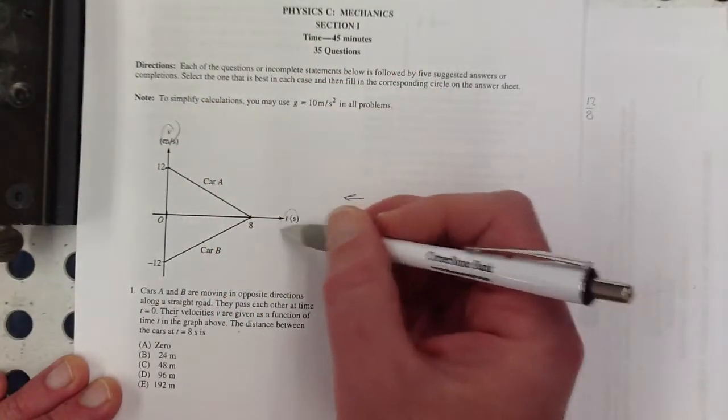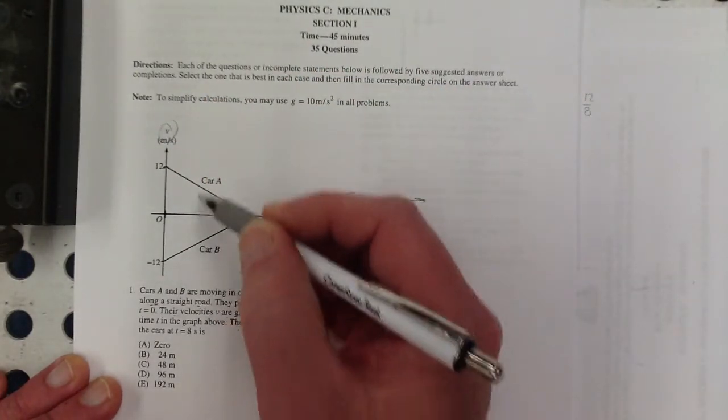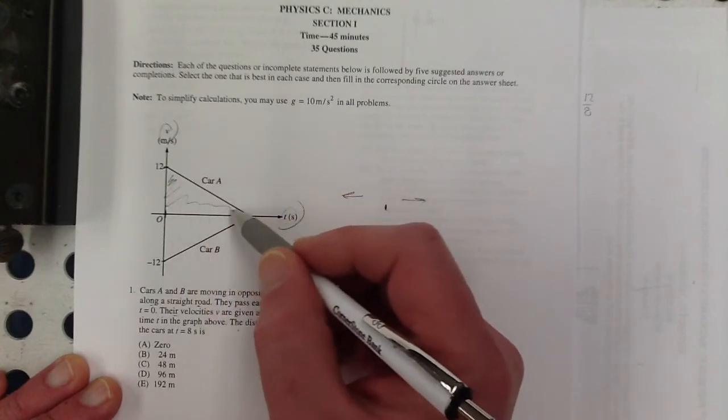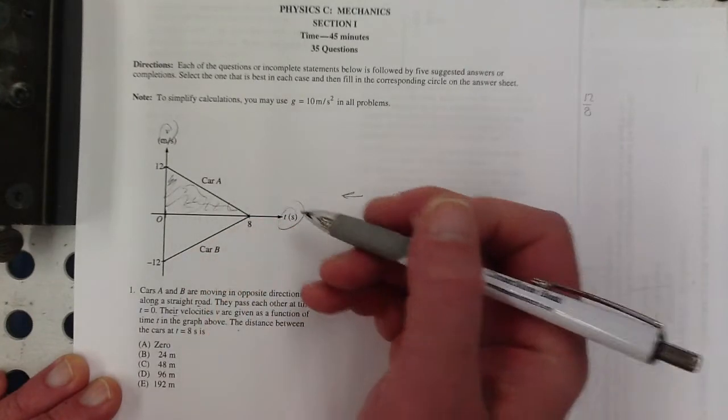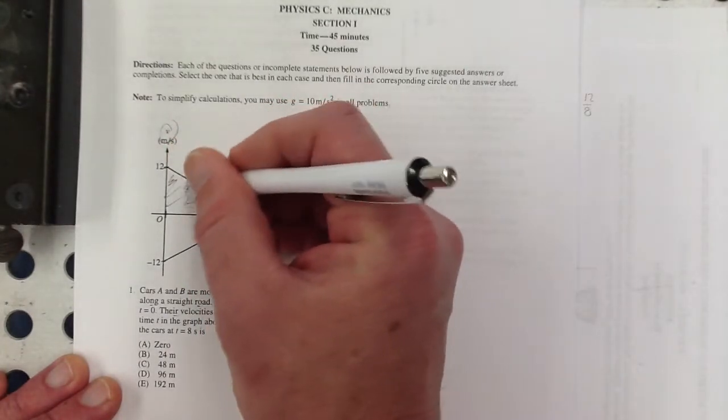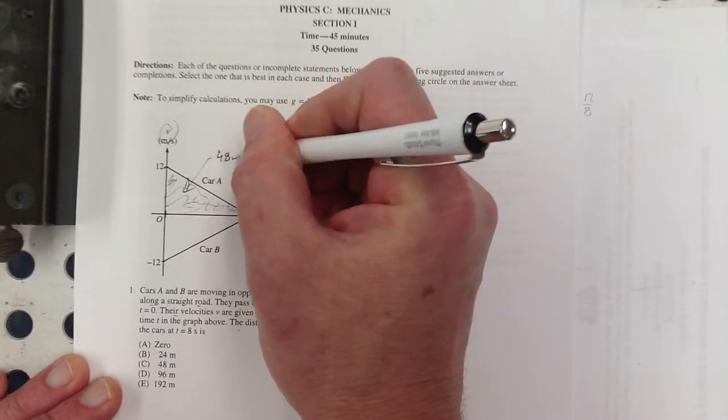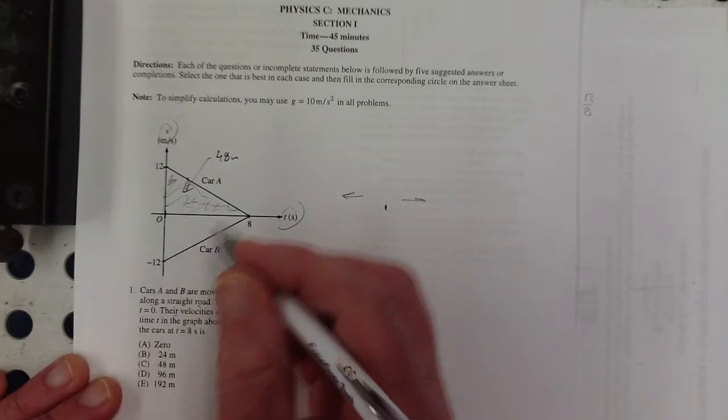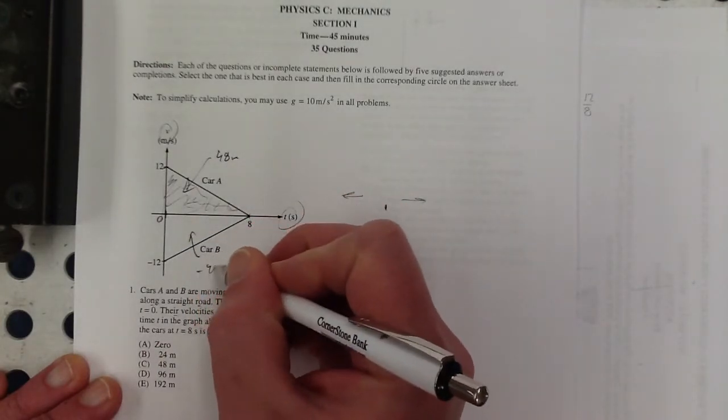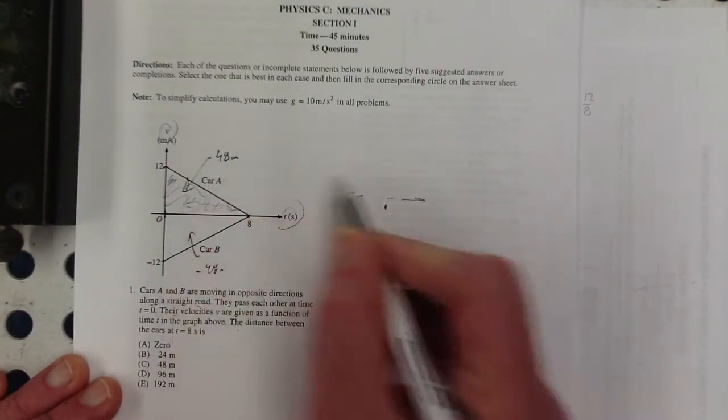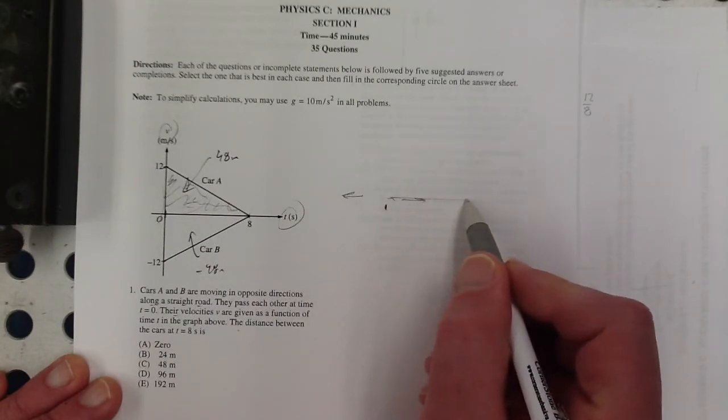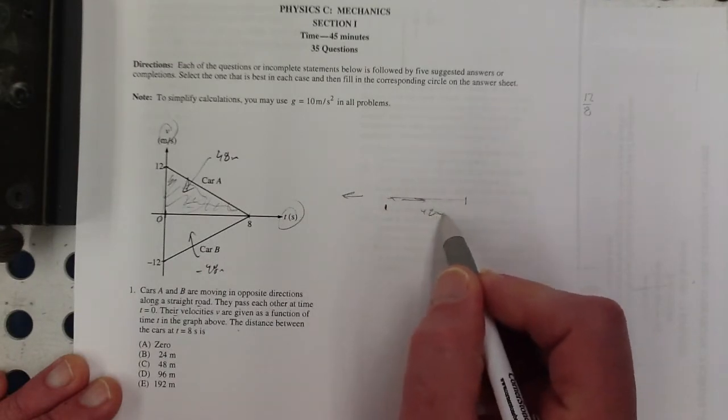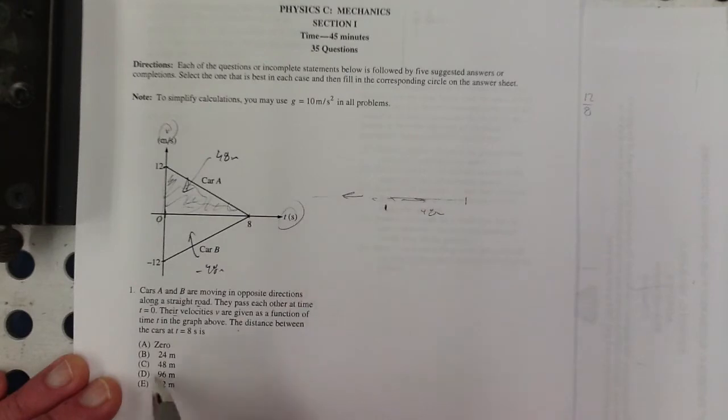Well, if I want to know displacement and I'm looking at velocity time, that's the area under this. So that's going to be 48 meters, just doing the area of that triangle, and this is negative 48 meters. So this car, car A, was going in this direction, slowing down, going 48 meters, and this one in the negative direction. So they're 96 meters apart.